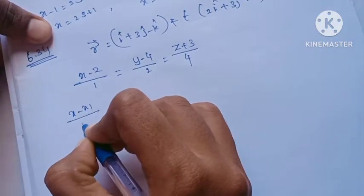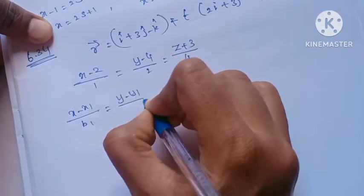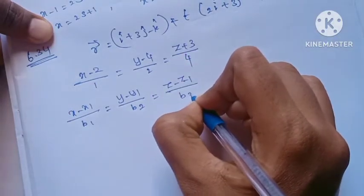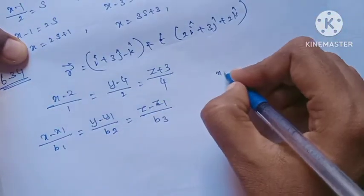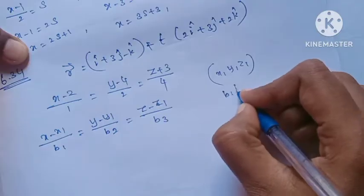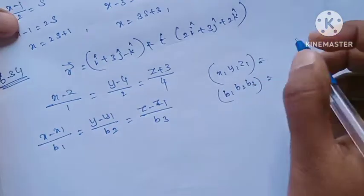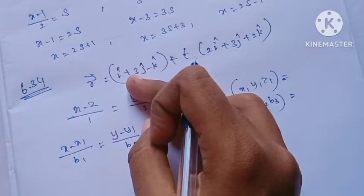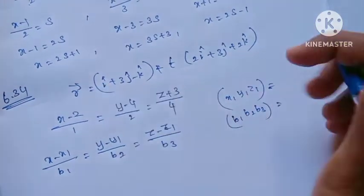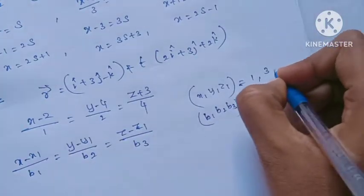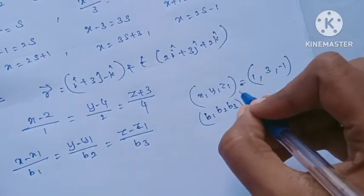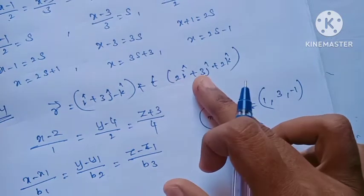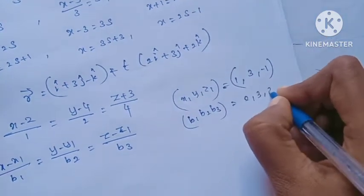The formula is: (x minus x1) by b1 = (y minus y1) by b2 = (z minus z1) by b3. Here x1, y1, z1 is the point, and b1, b2, b3 are the coefficients of the b-vector. The b-vector is the parallel line direction. Here b1, b2, b3 are 2, 3, 2.